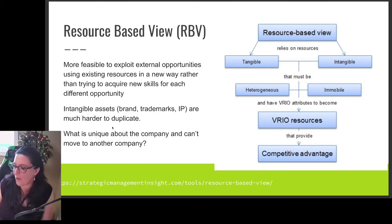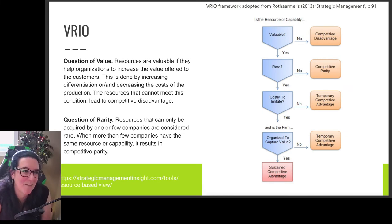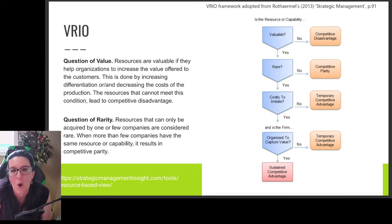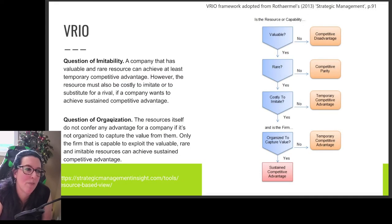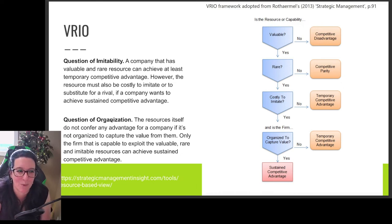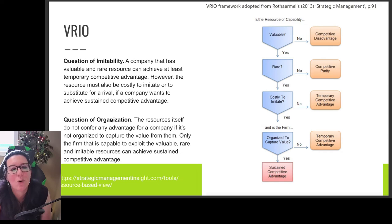The VRIO framework helps us identify sustainable competitive advantage resources. We ask: which resources are Valuable — do they increase value added to the customer? Which are Rare — other companies don't have them? Which are Costly to imitate — if another company sees us using them, they can't easily get them? And is our Organization set up to exploit and protect those resources so they continue to give us that sustained competitive advantage?